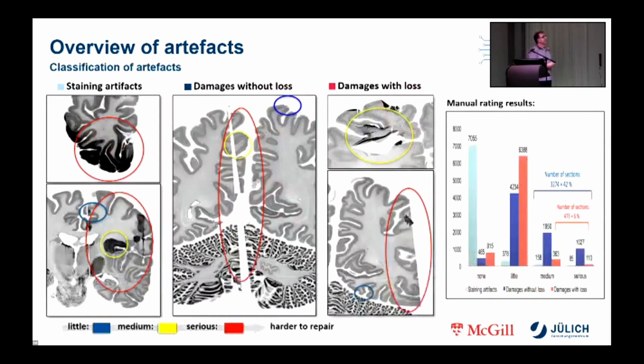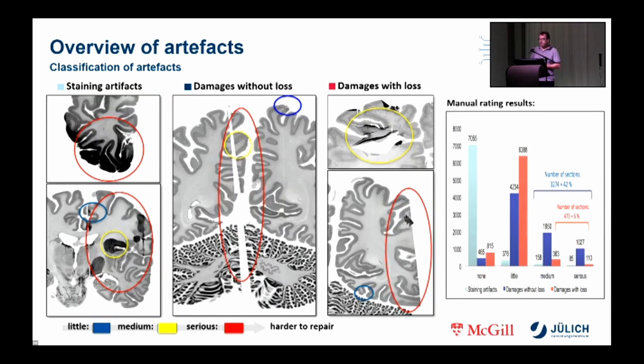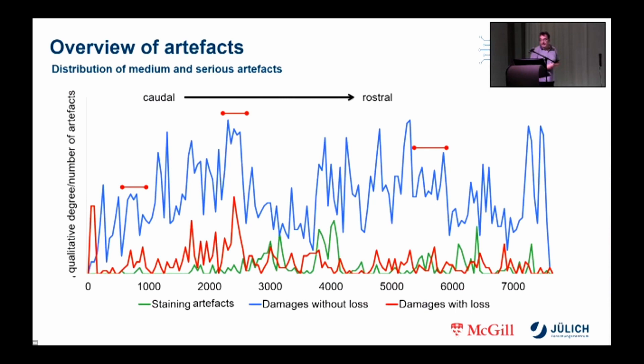In order to record the artifacts both quantitatively and qualitatively, we have divided them into three groups: staining artifacts, damage without loss, and damage with loss. Within these groups we also distinguish between minor, medium and serious artifacts. The result of a manual classification, depicted in the diagram on the right side, showed that about 42 percent of all sections had medium to even severe artifacts. Furthermore, artifacts often extend over several consecutive sections, which is of great importance for the repairs — this fact hampers any repair method based on consecutive sections only.